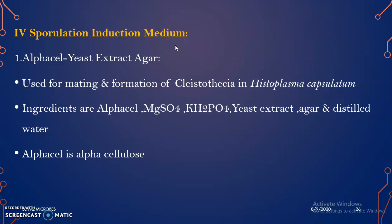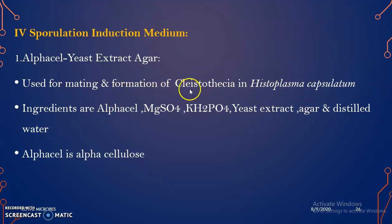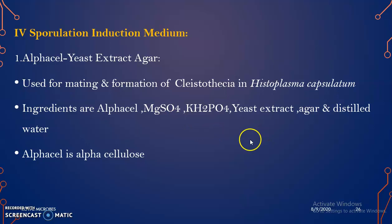Sporulation induction medium is mainly used for inducing spore formation and cleistothecia formation, or fruiting body formation, in the fungus. Some important sporulation media are alpha cell yeast extract agar, which is used for mating and formation of cleistothecia. Cleistothecia is a fruiting body in Histoplasma capsulatum. The ingredients are alpha cell (alpha cellulose), magnesium sulfate, potassium dihydrogen phosphate, yeast extract, agar, and distilled water.